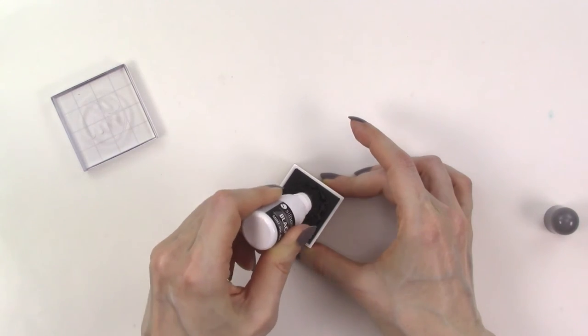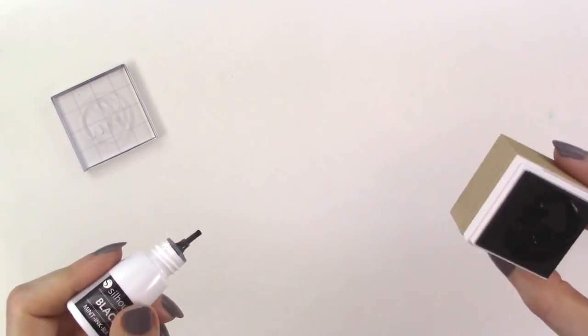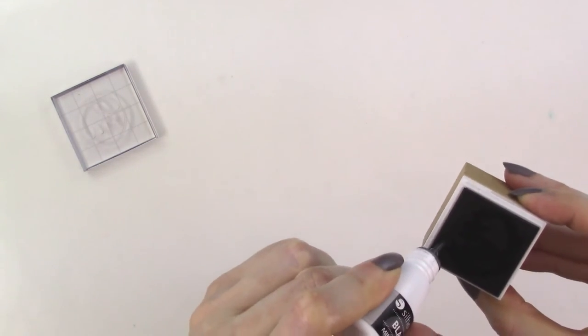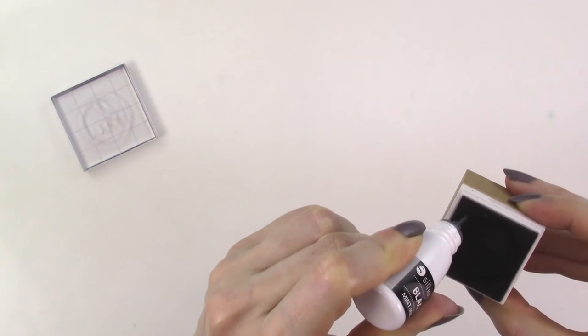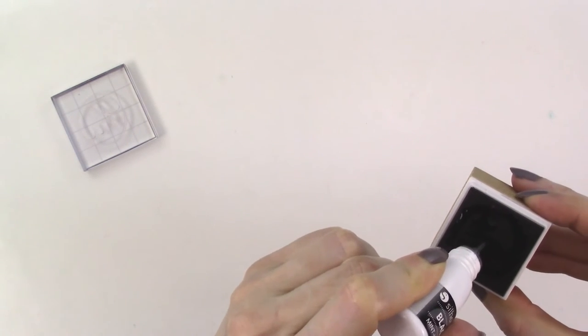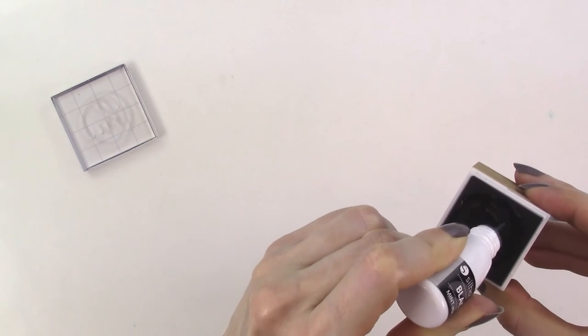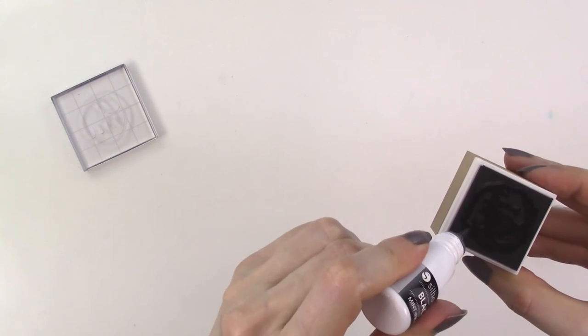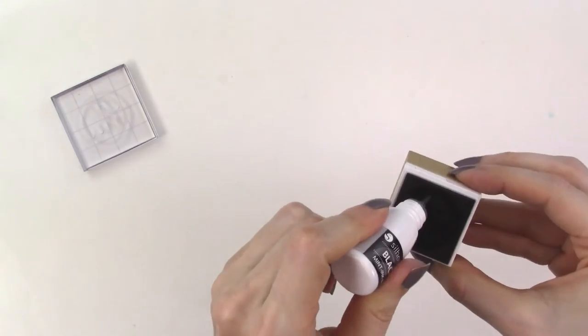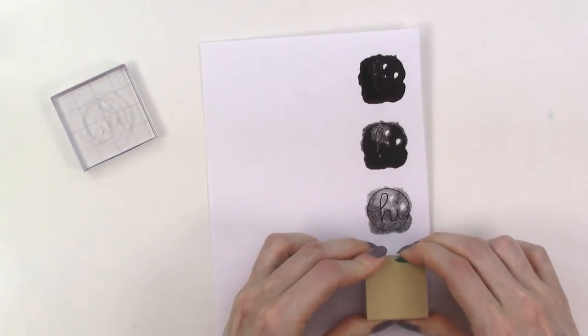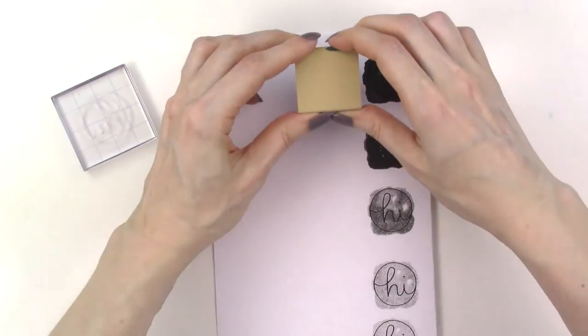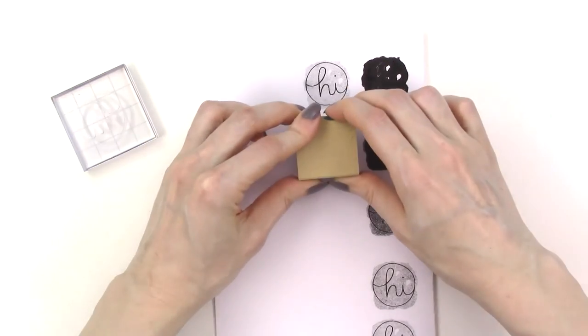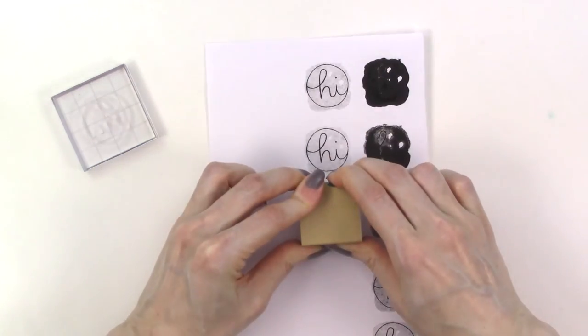There are other ink options and I'll have a link to a video in the description area below where I test different brands of inks with mint stamps. When using Silhouette Mint ink you have to let it sit for five to ten minutes on the stamp to absorb and it does absorb up into the stamp a little bit like a sponge. For the first few stamped impressions the stamp is very inky but the image becomes more crisp and clear after about eight or so impressions.